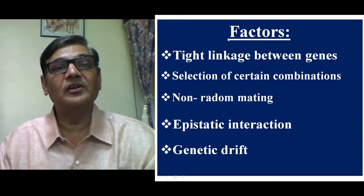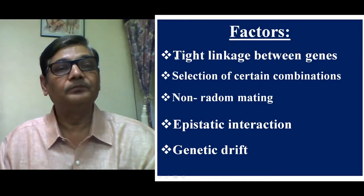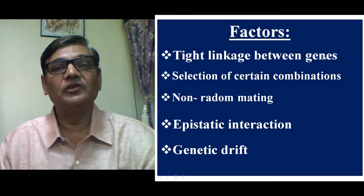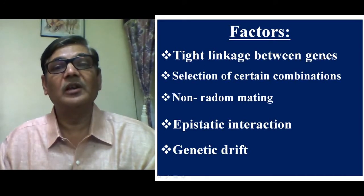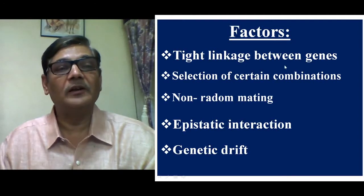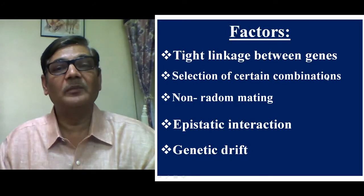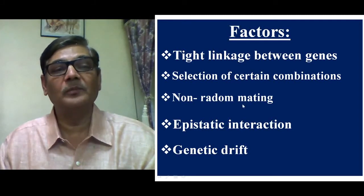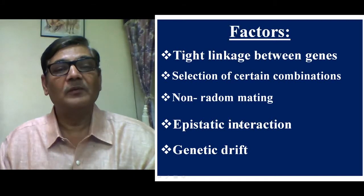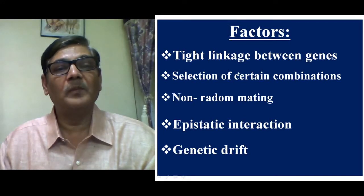The factors which cause linkage disequilibrium are: tight linkage between genes, which results in certain combinations occurring less while parental types remain more; selection of certain combinations; non-random mating; epistatic interaction, in which one gene masks the expression of another; and genetic drift. These are five major factors which result in linkage disequilibrium.